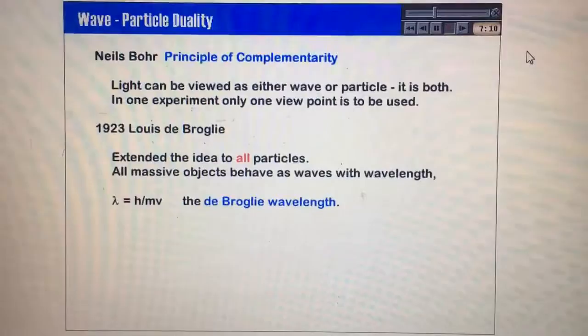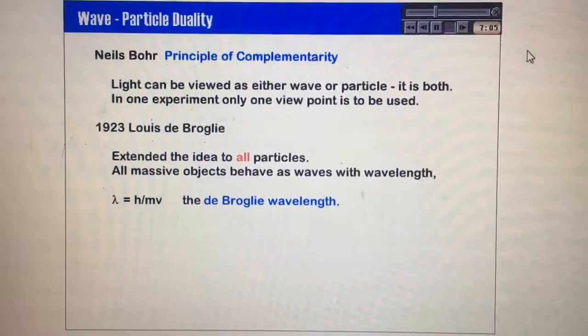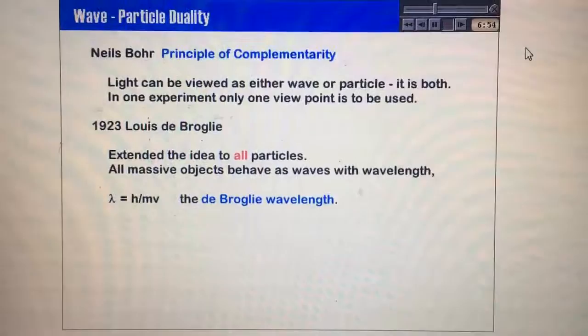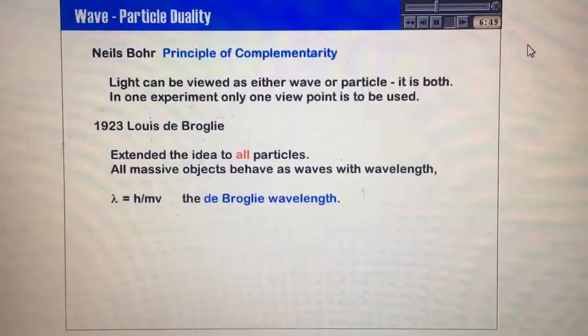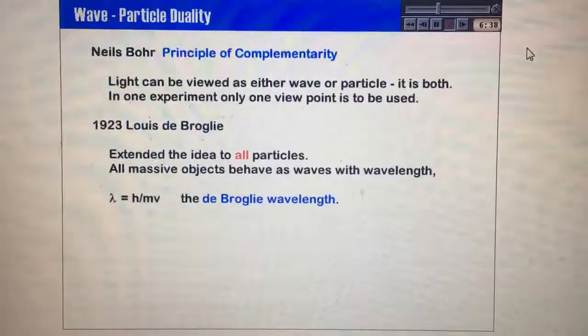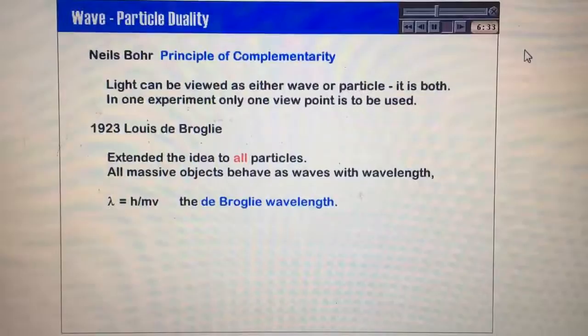All masses of objects behave as waves with a particular wavelength, and he came up with this formula. Lambda is equal to h over mv. Lambda, in this particular case, is a special wavelength. It's called the de Broglie wavelength, and it's equal to Planck's constant divided by mv, the momentum of the particle. So the momentum of the particle determines the wavelength of the object we're examining. So this is a really strange concept. This is basically saying that you yourself can be viewed as a wave with some particular wavelength, if you looked at yourself in the correct way.